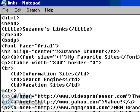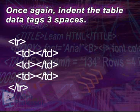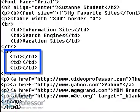Next, let's add another row to our table. One line below the closing TR tag, add this code. Once again, indent the table data tags three spaces. This time, we've left the TD tags empty, so the next step is to add content within each column.